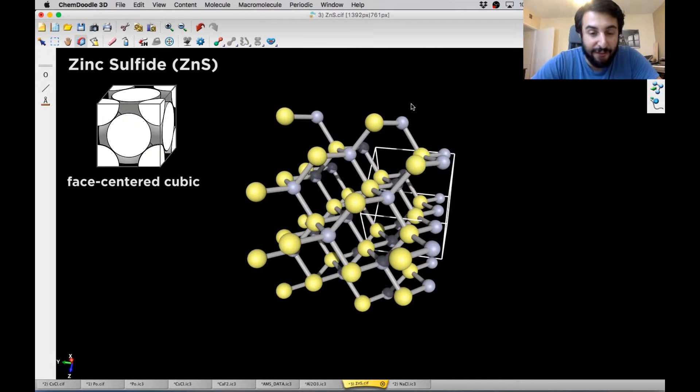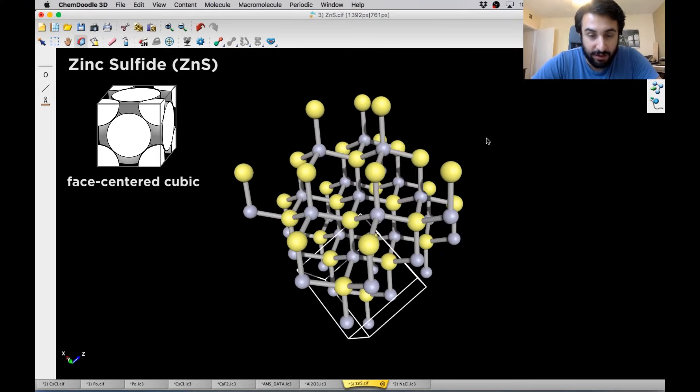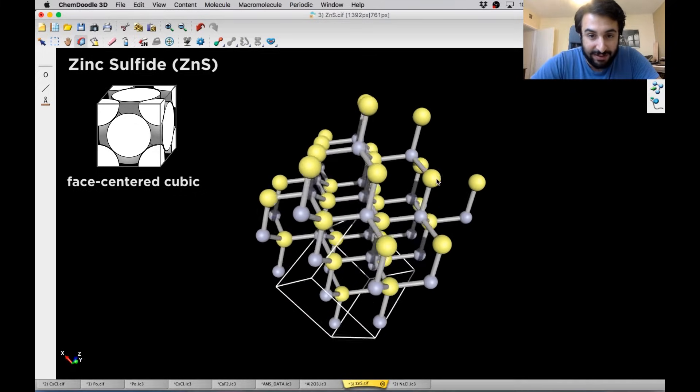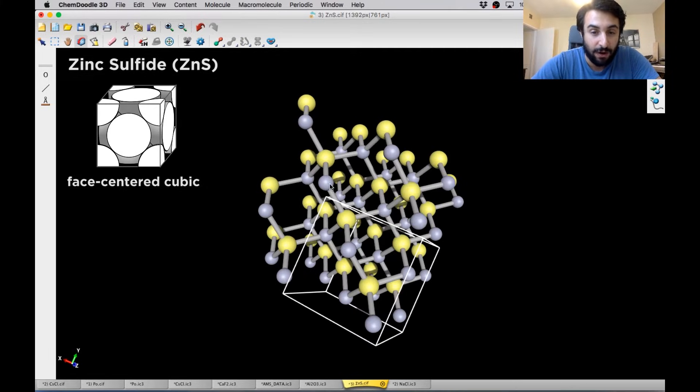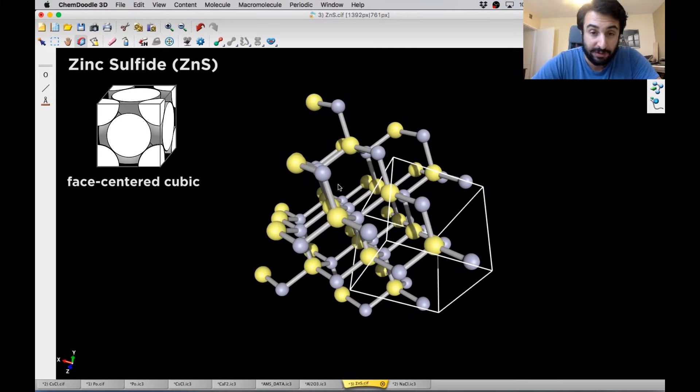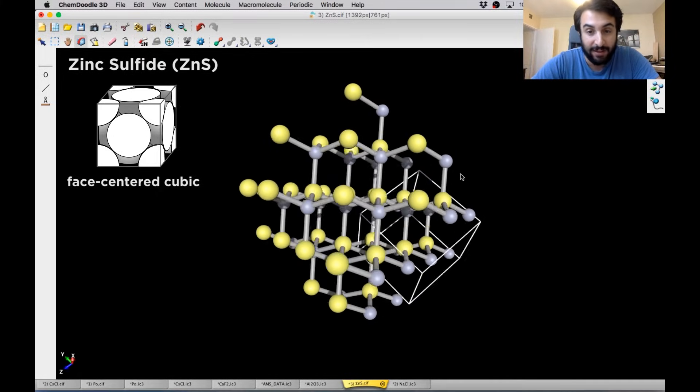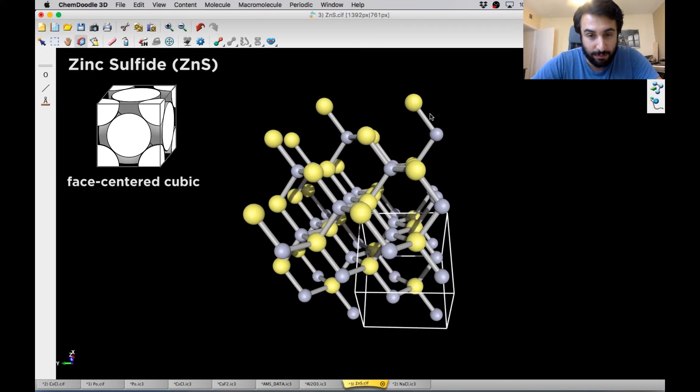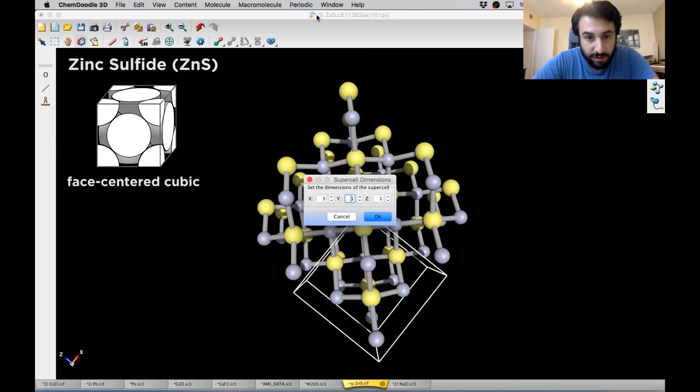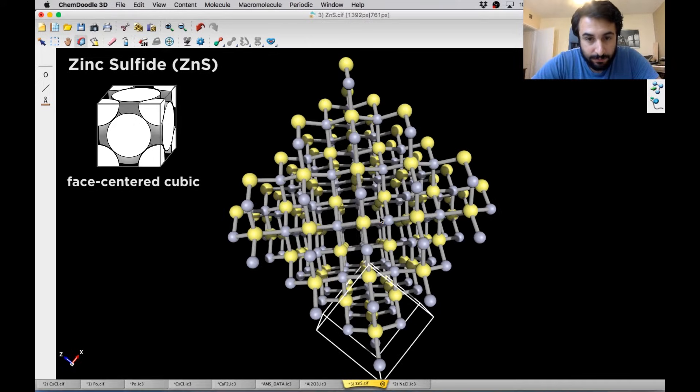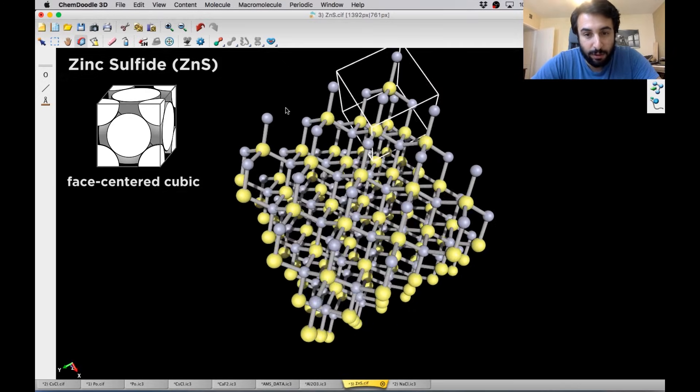And this is actually a face-centered cubic structure. So that is where the sulfide ions are forming the unit cell centered in the faces of the cube. And then the zinc ions are filling the tetrahedral holes formed by that structure. So this is what this one looks like. And we can build that out even a little more. Let's just do three.